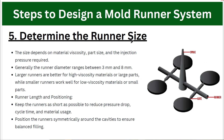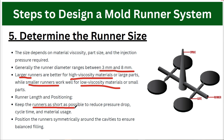Next, determine the runner size. Runner size depends on material viscosity, part size, part geometry, and injection pressure requirements. Generally runner diameter varies from 3 mm to 8 mm. For high-viscosity materials we use a larger runner, and for low-viscosity materials we use a smaller runner. We need to keep the runner as short as possible to reduce pressure drop and minimize cycle time and material usage. The runner must also be maintained symmetrically so that all cavities fill at the same time with balanced material flow.